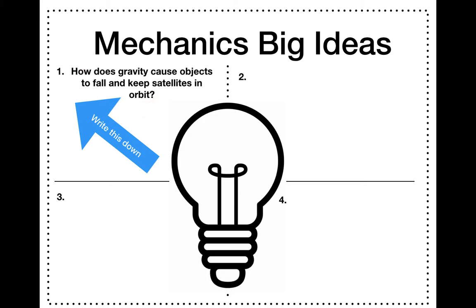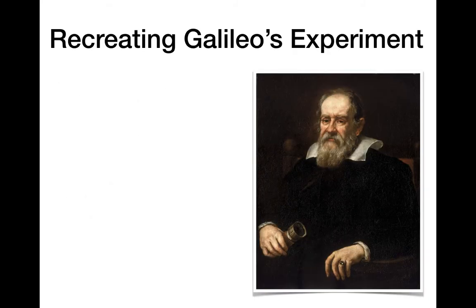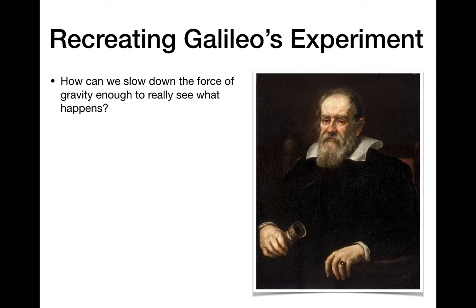Big idea number one: write this in your notebook. How does gravity cause objects to fall and keep satellites in orbit? There's been several lessons talking about gravitation in this context. There's a video clip here about Galileo's inclined plane experiment. I'm not going to play the whole thing for you in the screencast, just a waste of upload time, but the link is put for you guys on Schoology. You can watch it yourselves or you can play the whole thing in class on the projector from that link.